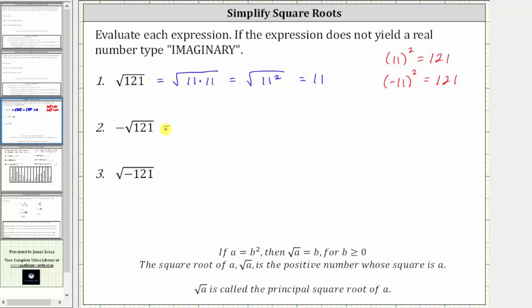Let's go ahead and show some work here and write this as negative or the opposite of the square root of 11 times 11, which equals the opposite or negative square root of 11 squared, which simplifies to negative 11.